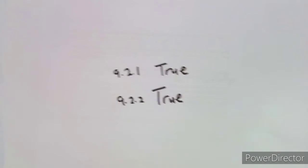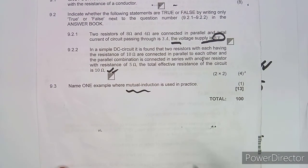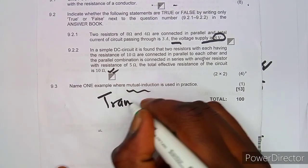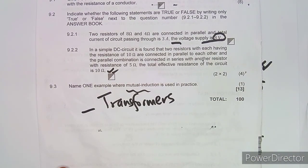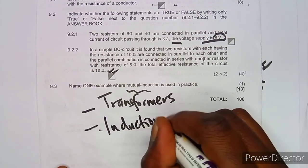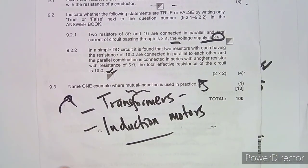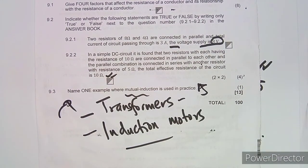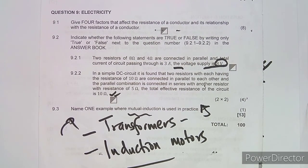So both 9.2.1 and 9.2.2 are true. Now for 9.3: give one example where mutual inductance is used in practice. Mutual inductance is used in transformers, and also in induction motors. Those are the practical applications of mutual inductance.